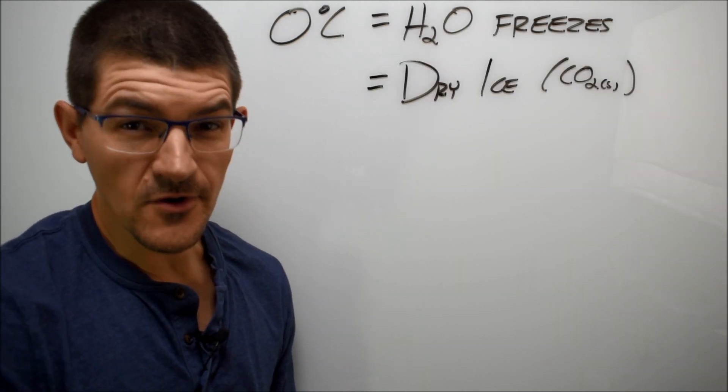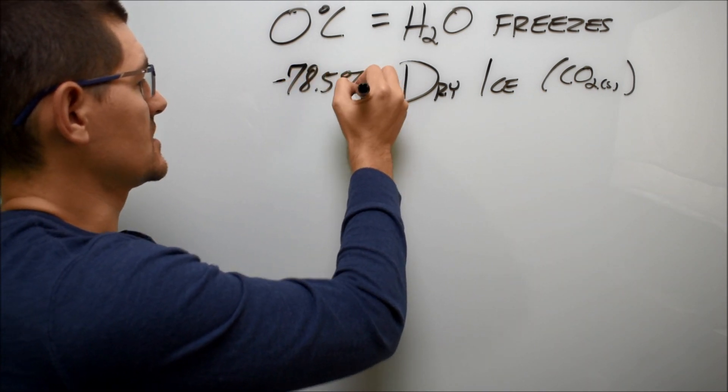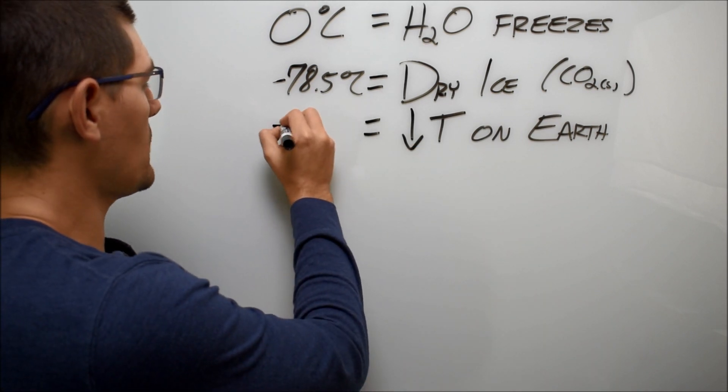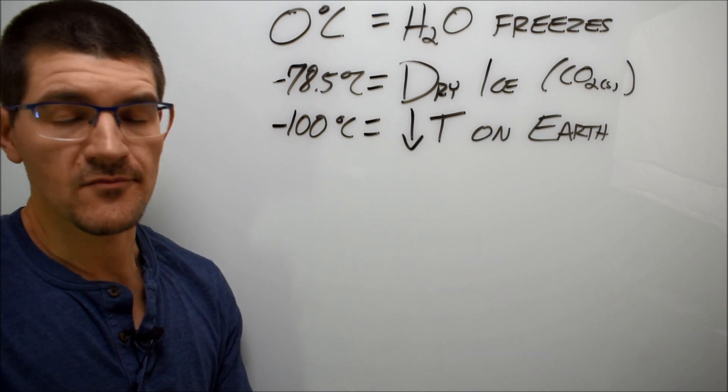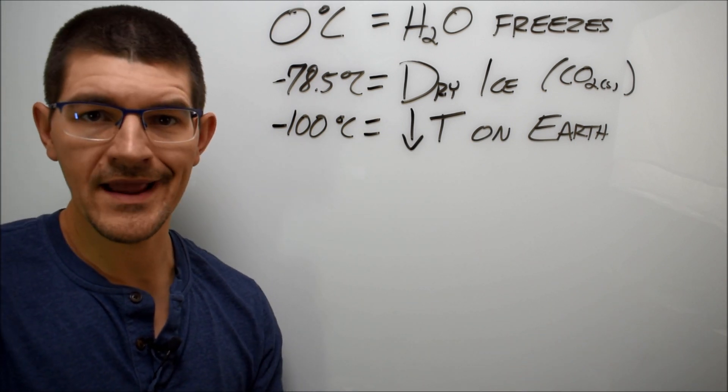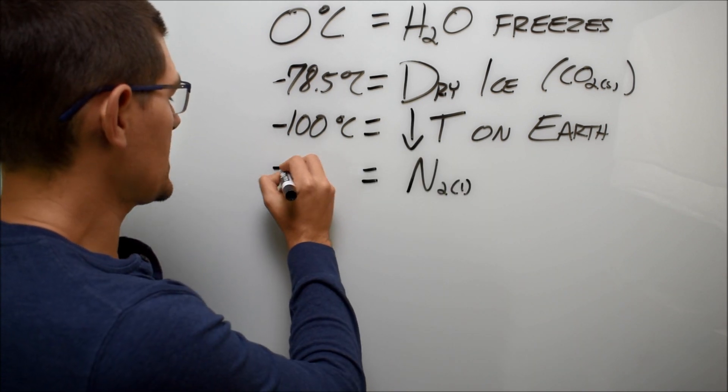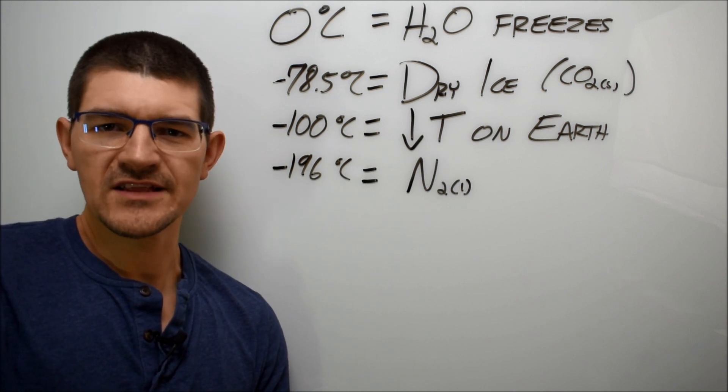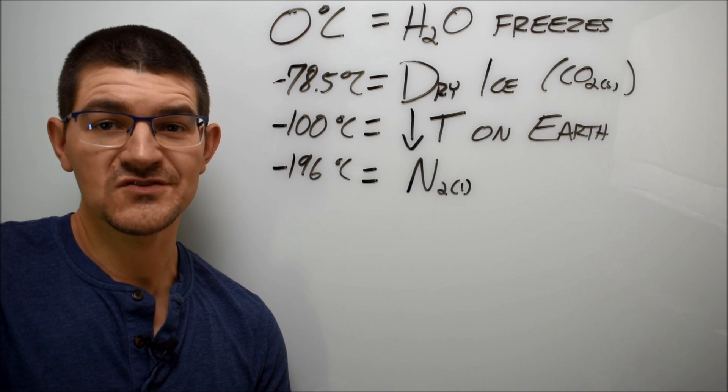Next on our list is dry ice, or solid carbon dioxide, at minus 78.5 degrees C. Next is the coldest temperature ever recorded on Earth, minus 100 degrees C. Where? Well, you can probably guess—on a ridge somewhere in Antarctica in the middle of the winter. Next, we have liquid nitrogen at minus 196 degrees C. I used liquid nitrogen pretty frequently in grad school, mainly as the sacrificial coolant for our NMRs to keep the magnets cold.